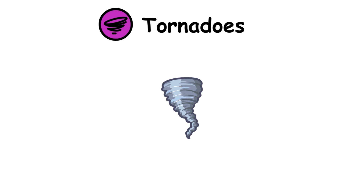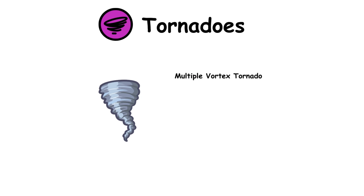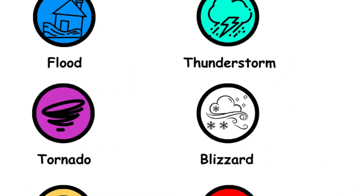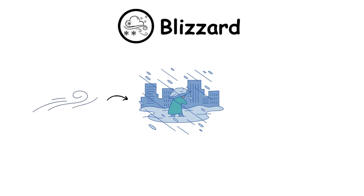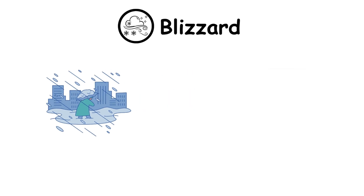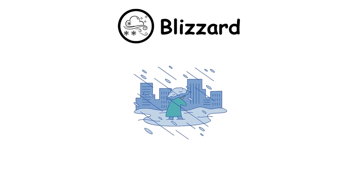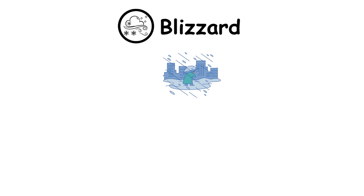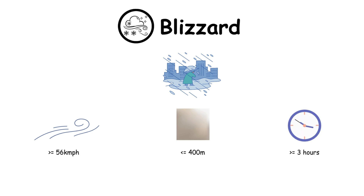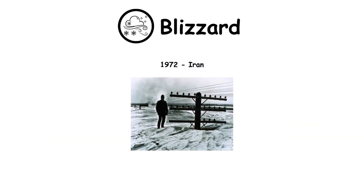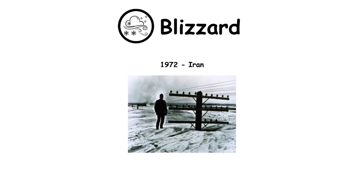The most extreme tornadoes can attain wind speeds of more than 480 kilometers per hour, can be more than 3 kilometers in diameter, and can stay on the ground for more than 100 kilometers. Various types of tornadoes include the multiple vortex tornado, land spout, and water spout. Blizzards. A blizzard is a severe snowstorm characterized by strong winds causing blowing snow that results in low visibility. These blizzards last for a prolonged period of time, typically 3 or 4 hours, and usually stretch to hundreds or thousands of kilometers. To be a blizzard, a snowstorm must have sustained winds greater than or equal to 56 kilometers per hour, with blowing or drifting snow which reduces visibility to 400 meters or less, and must last for 3 hours or more. The 1972 Iran blizzard, which caused 4,000 reported deaths, was the deadliest blizzard in recorded history.